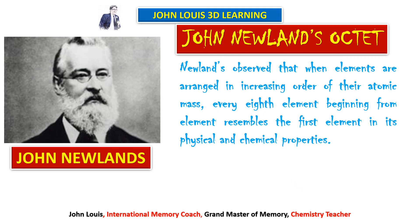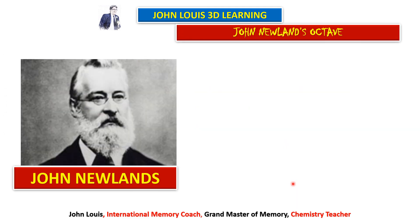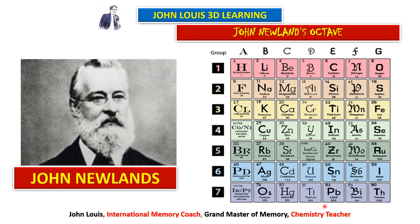Looking at his table, he arranged seven elements in increasing order of atomic weights, and then the eighth element he put below the first one, the ninth below the second, the tenth below the third, and so on — arranging all 56 elements discovered during his period. Elements placed in the same column were found to have similar properties.